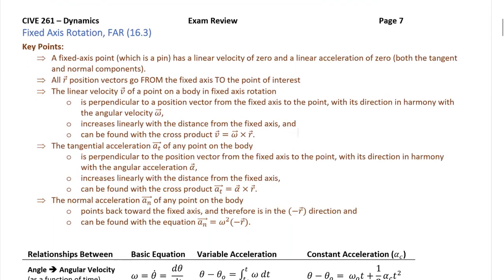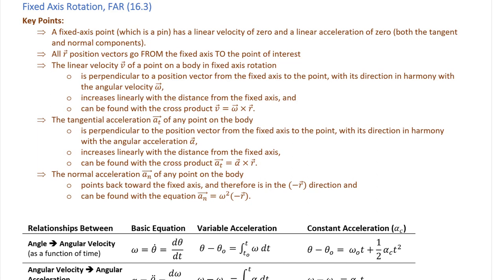Moving forward to fixed axis rotation. Here are those three fundamental equations introduced in section 16.3. A fixed axis by definition is a pin with a linear velocity of zero and a linear acceleration of zero. Therefore if you're looking for the linear values of velocity and acceleration of a pin, you're going to get zeros across the board. We treat that pin as basically part of the body rotating around it, using the omega and alpha of the body itself.